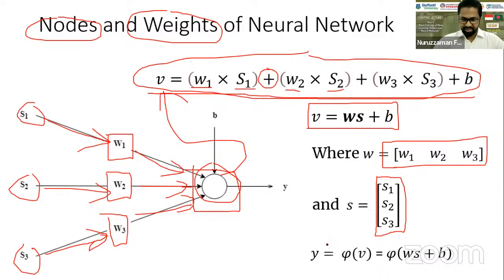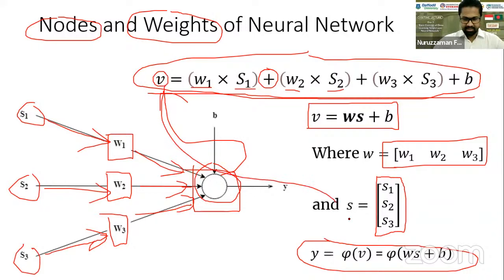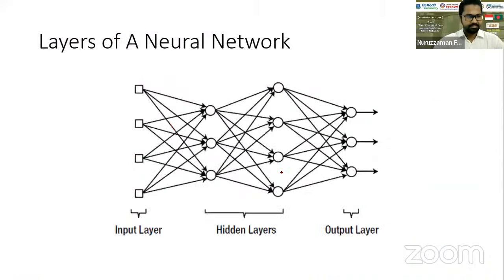There is one more thing: the activation function. Once the weighted sum is calculated, it is sent to the activation function. The activation function processes the weighted sum and gives us a probability. Based on that probability, we make a decision. Depending on how many layers there are and how they are organized, we come up with different types of neural networks.